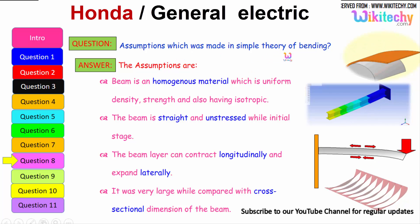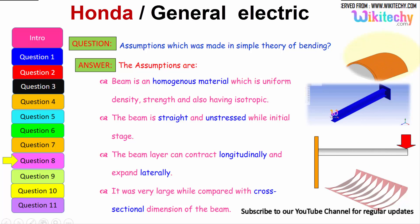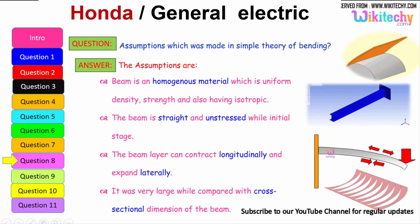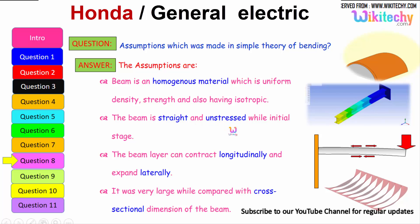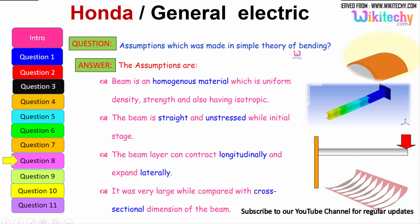What is the assumption which was made in simple theory of bending? The assumptions are: beam is a homogeneous material which is uniform density. It should be uniform density, strength and also having isotropic. The beam is straight and unstressed while initial stage. The beam can contract longitudinally and expand laterally. It was very large when compared with the cross-sectional dimension of the beam. These are some of the assumptions we have to make for the theory of bending.